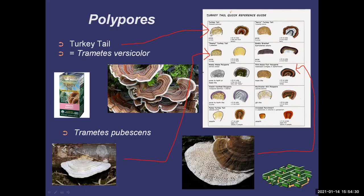There are many varieties of turkey tail. There's the true turkey tail — that's the medicinal one. It's very white on the undersurface and has pores. False turkey tail can look very similar on top with turkey-like colors, but underneath it's not white — it's kind of yellowish and you won't see pores at all. It looks very velvety and smooth. Some polypores have a maze-like undersurface, which is really pretty.